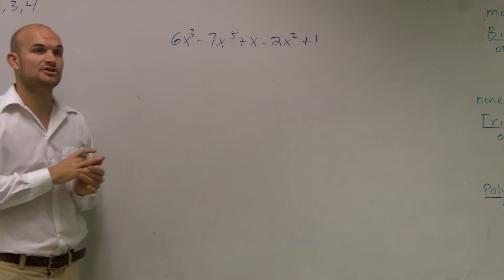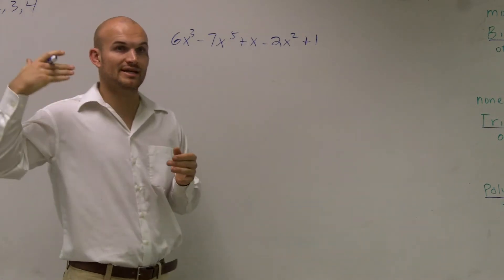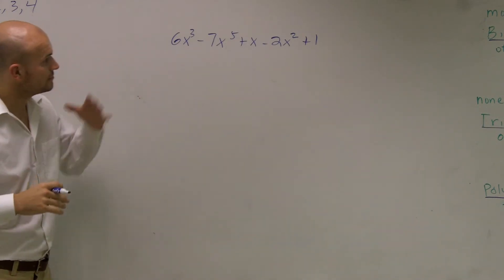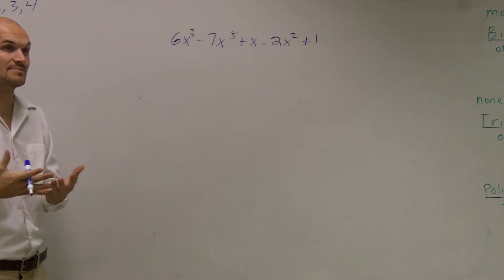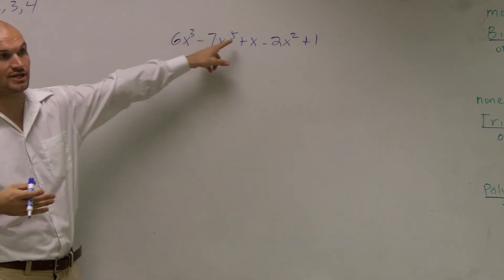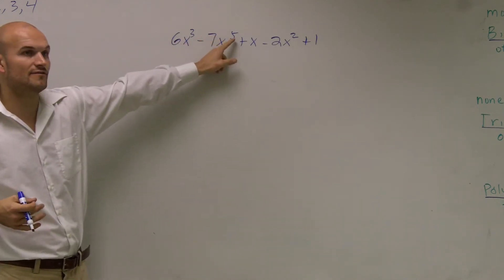Remember, put it in standard form means you're going to have your exponents, or your degrees, go in descending order. So the first thing I do is I need to find my largest degree or exponent, which is to the fifth power.